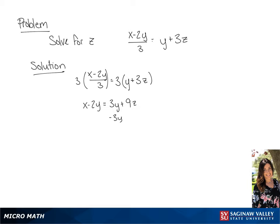Now we're going to subtract 3y from each side, giving us x minus 5y equals 9z. Now we're going to divide both sides by 9 in order to isolate z, and we will get z equals x minus 5y all over 9.